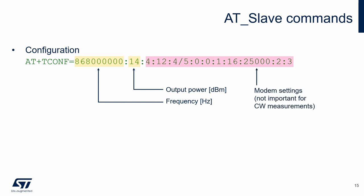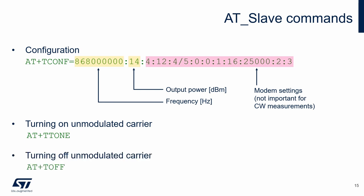For our tests where we use only an unmodulated carrier, we don't have to modify the modem parameters. To turn on the unmodulated carrier, we use the T-tone command, which has no parameters. To turn off the unmodulated carrier, we use the T-off command, which also has no parameters.